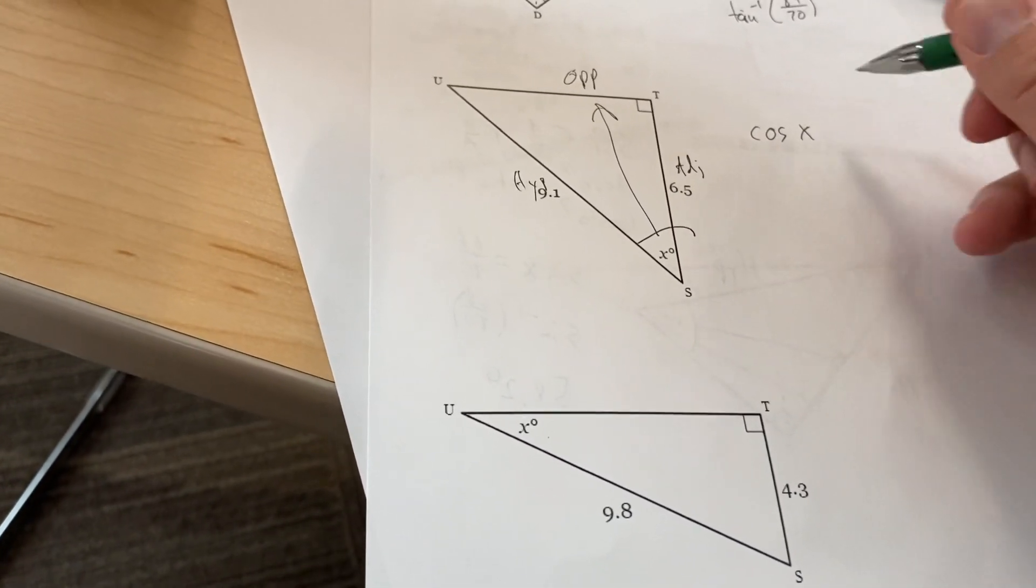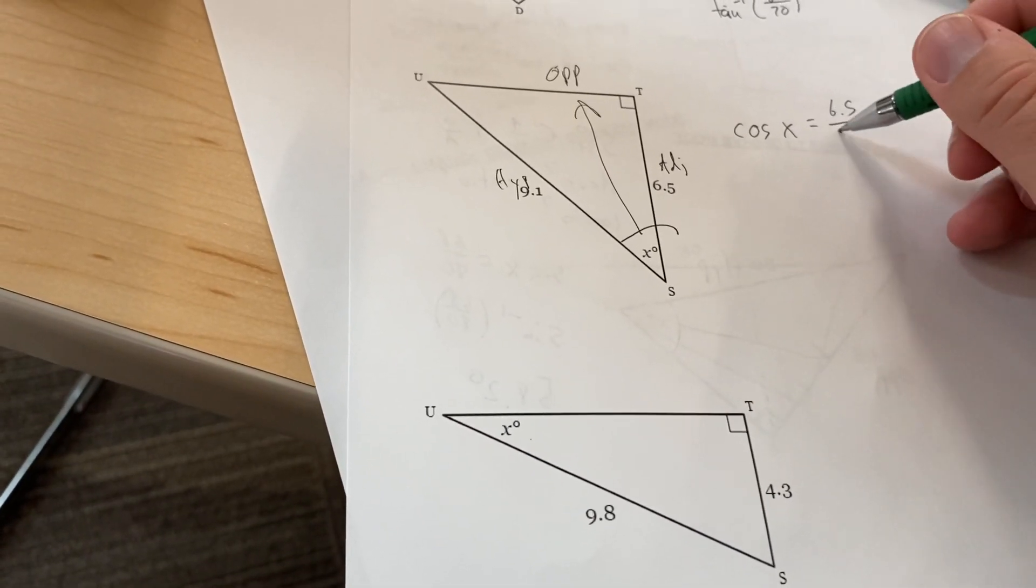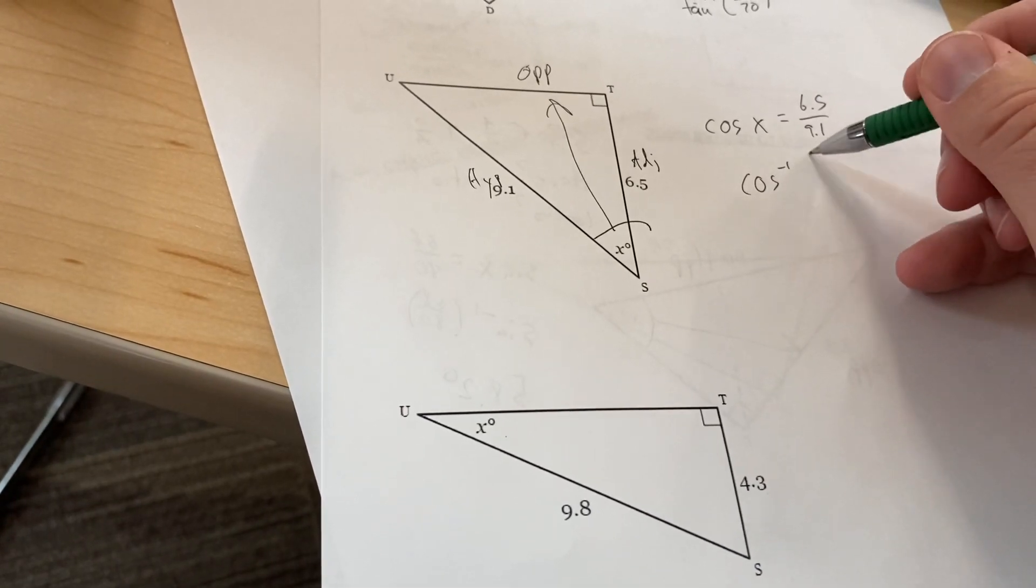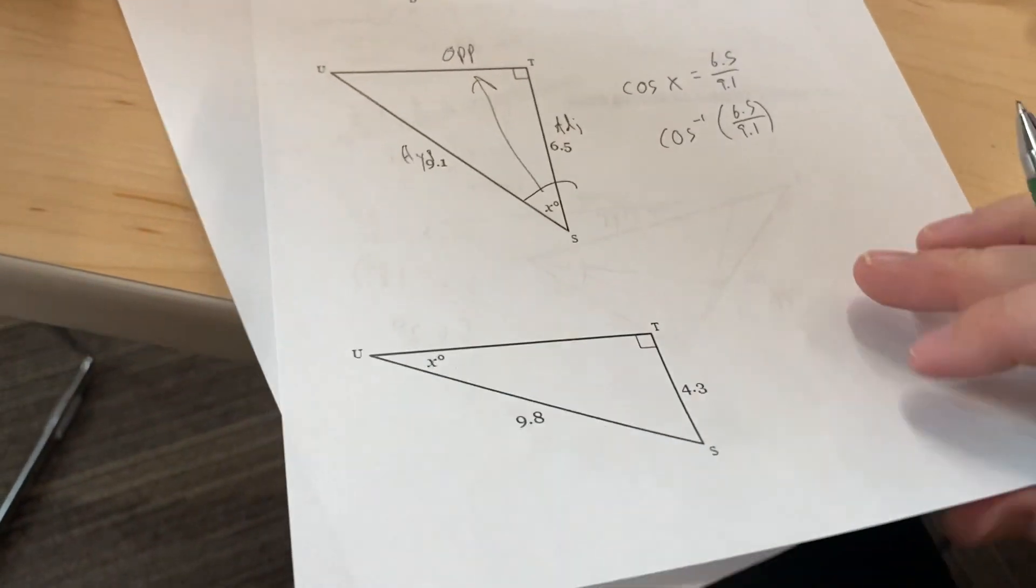So the cosine of this one is going to be equal to the adjacent over the hypotenuse, 6.5 over 9.1. So I'm going to do the inverse cosine of 6.5 over 9.1 to get that angle.